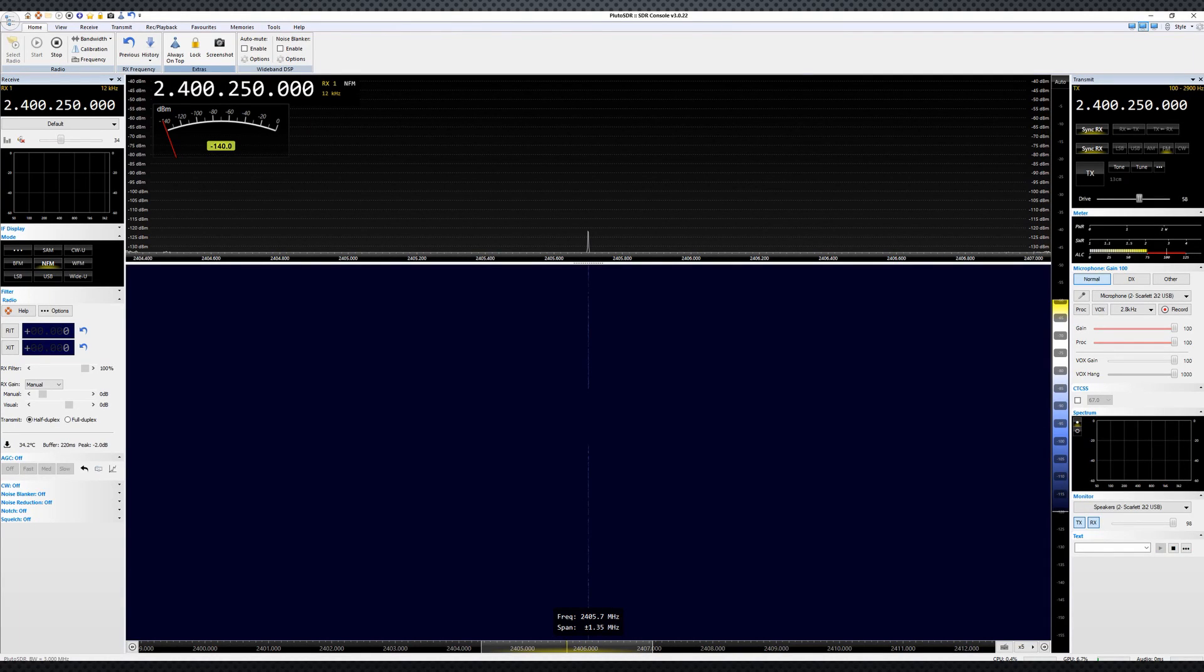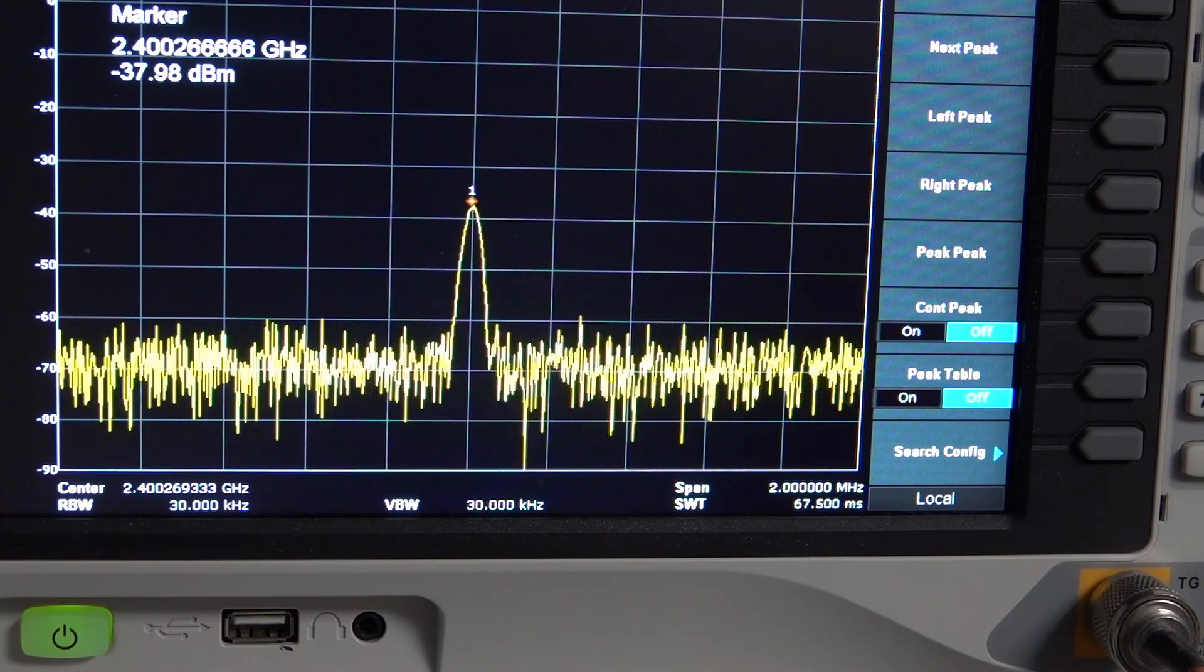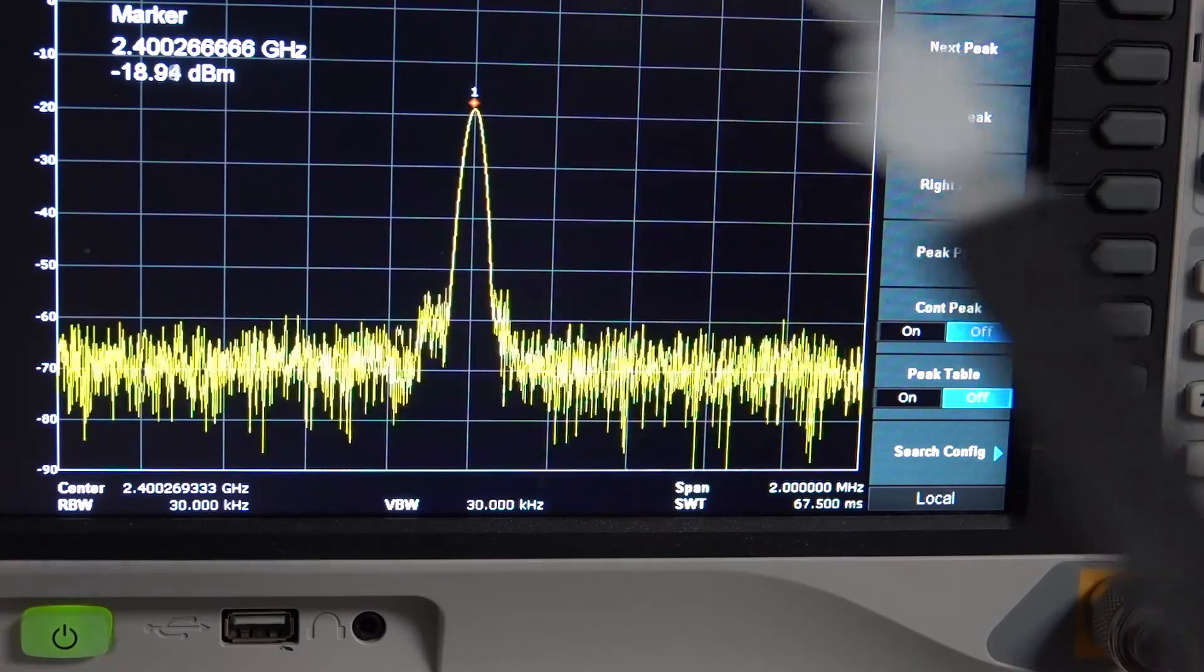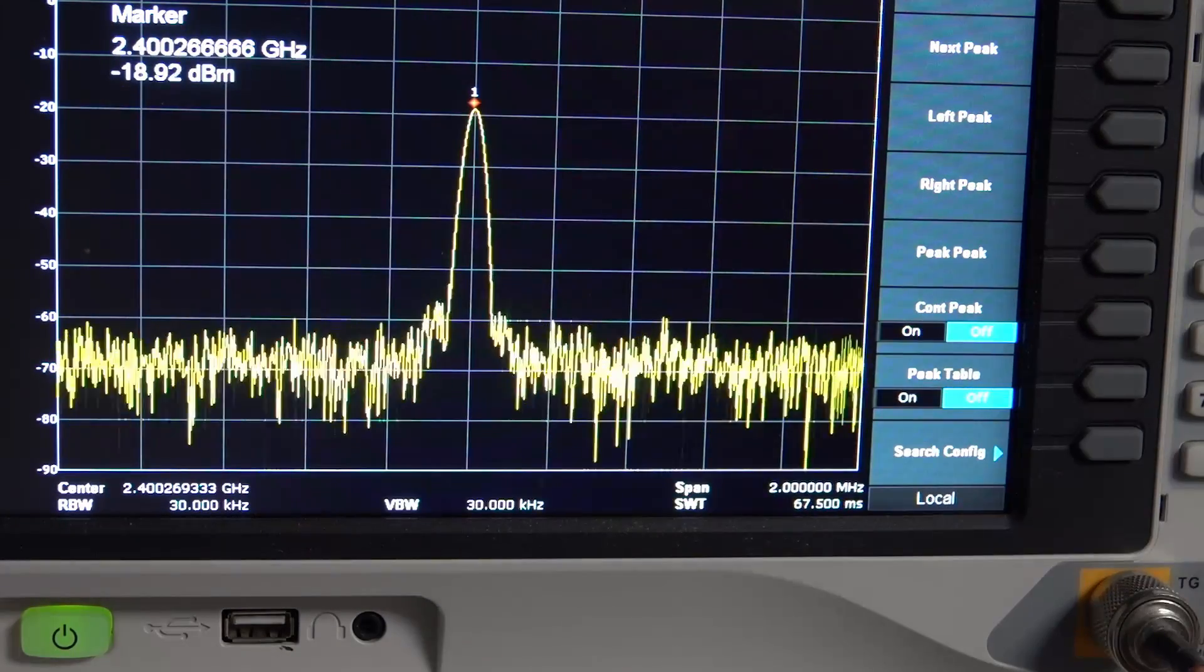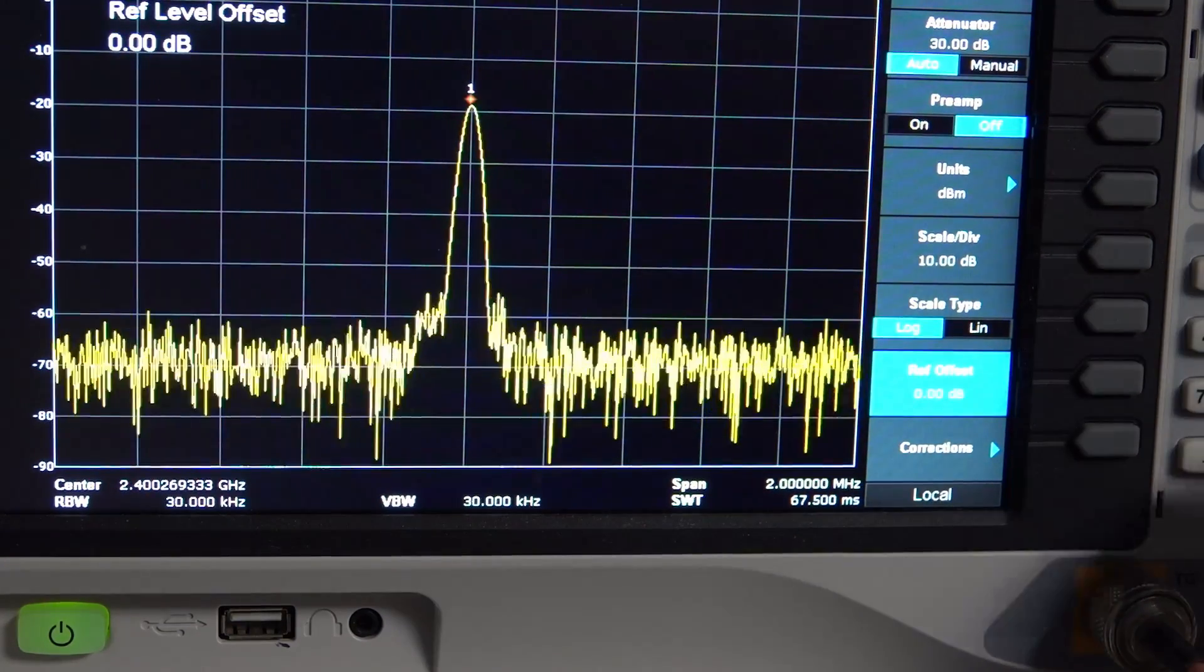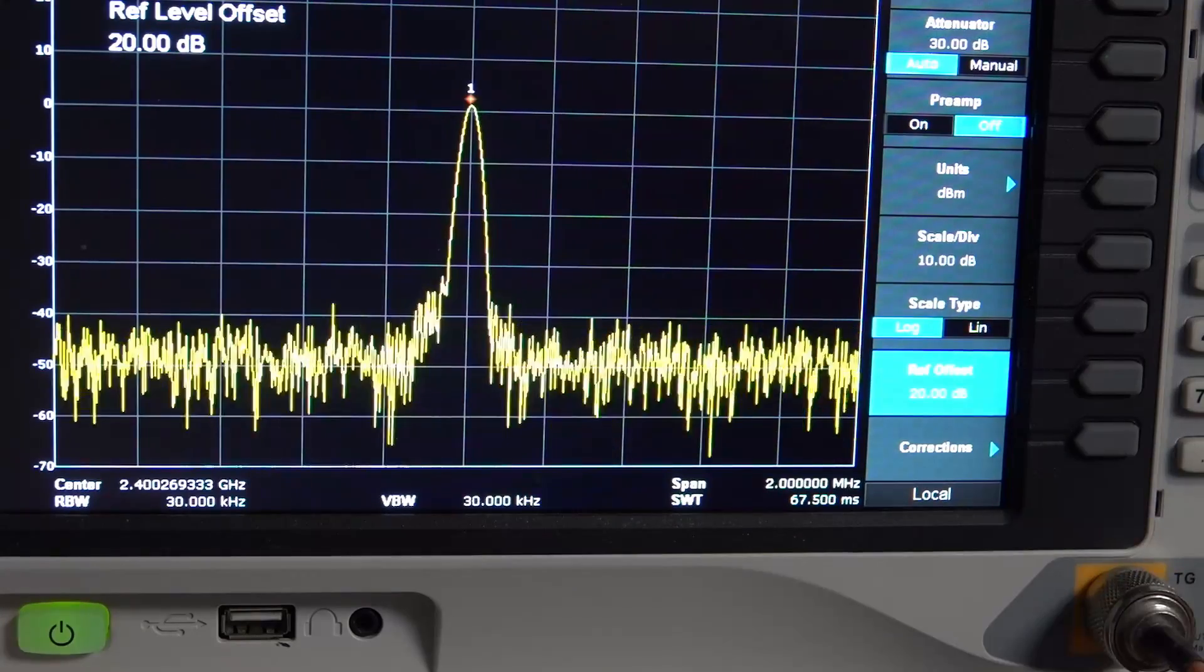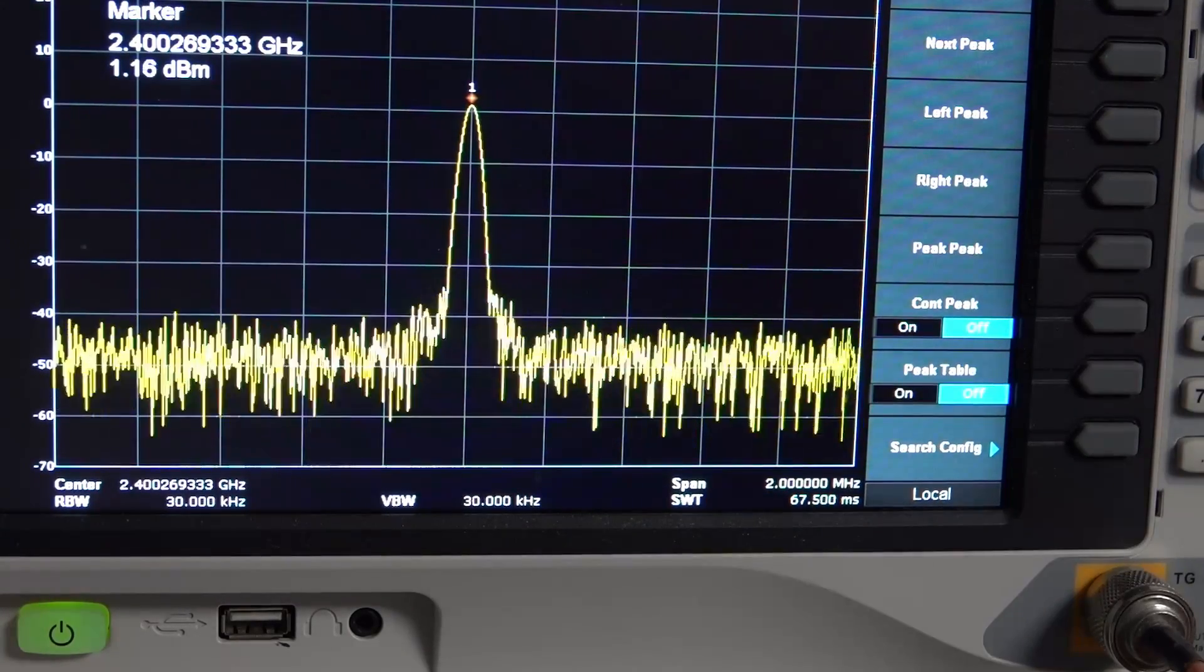I use the SDR console software to create a tone, which is the name used by RF engineers for a single frequency. Here I can adjust the power. The maximum power is around minus 19 dBm. Of course, we have to add the 20 dB of the attenuator. The instrument can do that calculation automatically, and now it shows around 1 dBm or 1 mW.